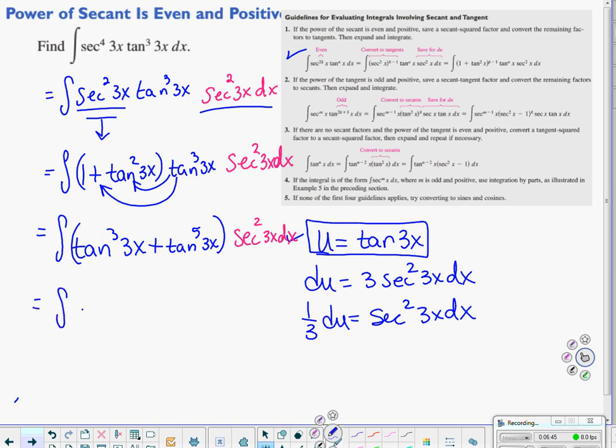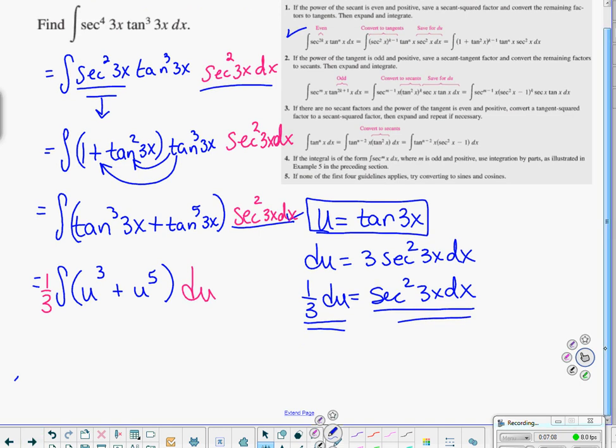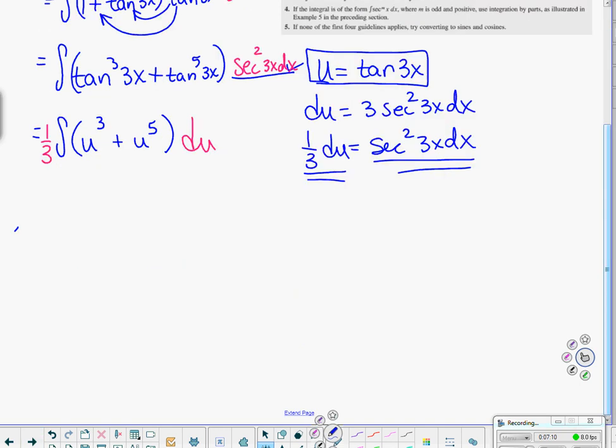Let's do some u-subbing here. u to the 3rd plus u to the 5th, secant squared 3x dx is equivalent to a 1 third du. So I'm going to replace that with du and a 1 third. And now you're saying, oh, home free, aren't we? This will be awesome. So we get 1 3rd. Integrate u to the 4th over 4 plus u to the 6th over 6 plus our c.